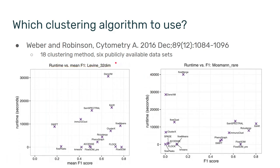To the left, you're seeing a dataset called Levine 32 Dimension, taken from the Phenograph paper by Levine et al. This dataset represents classic immune profiling — many different immune subsets, a broad view of the immune system. To the right, you see Mosman-Rare, a dataset where we are looking for a specific rare subset and want to see whether the clustering algorithm identified that subset correctly.